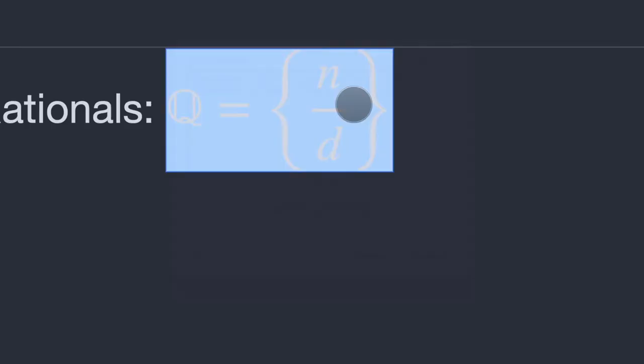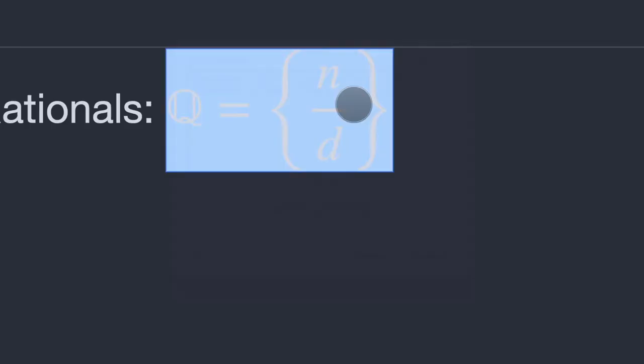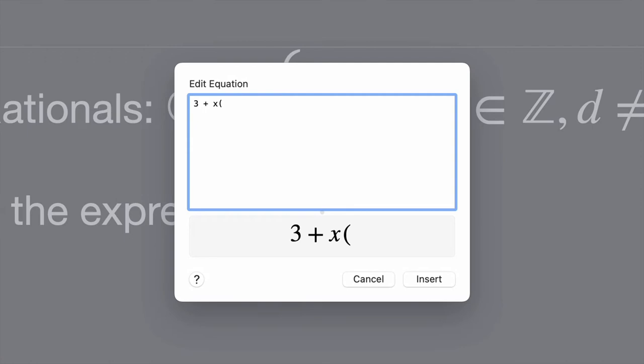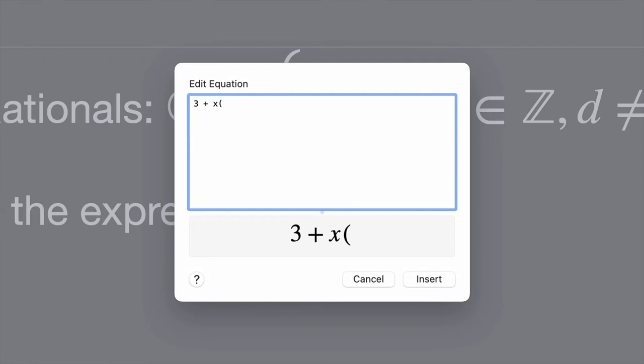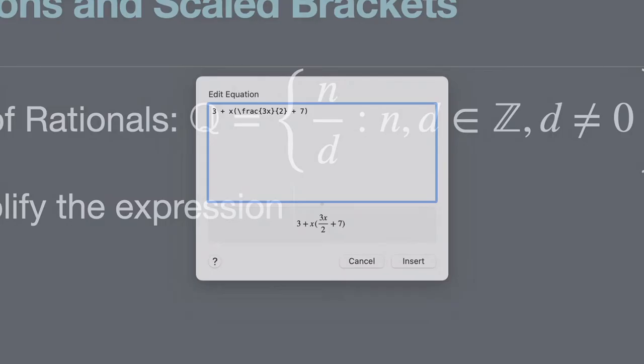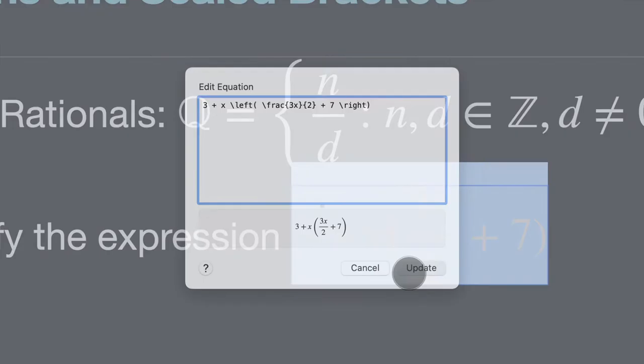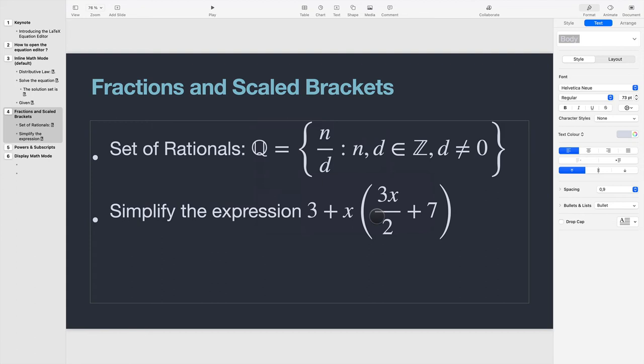Now I'm going to move into the next part here where we're just going to show how to simplify an expression. At least I'm going to give you an expression to simplify. So we have three plus X multiplied by three X over two using the fraction command plus seven. Again, we run into that same problem where our brackets are not scaling with the expression. So again, to fix this, we're going to go to the opening parenthesis in this case, giving it the left command, and the right parenthesis, having the right command prepended to it. And that fixes the brackets there.